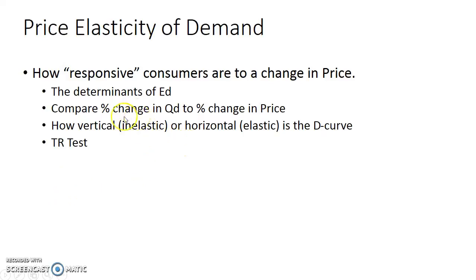Another way is to mathematically compare the percentage change in quantity demanded to the percentage change in price. We use the absolute value, so the number is always positive. If the elasticity of demand is greater than 1, the good is elastic. If it's equal to 1, it's unit elastic. If it's less than 1, it's inelastic. Graphically, the more vertical the demand curve, the more inelastic; the more horizontal, the more elastic.